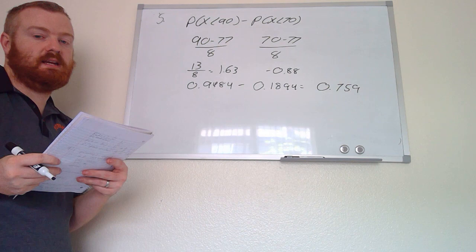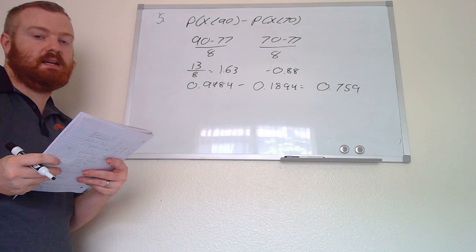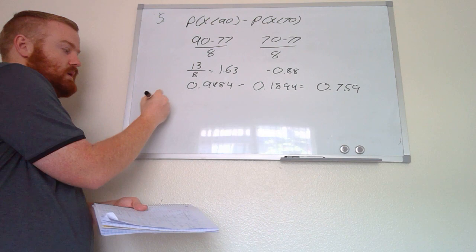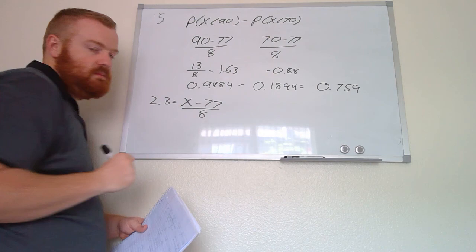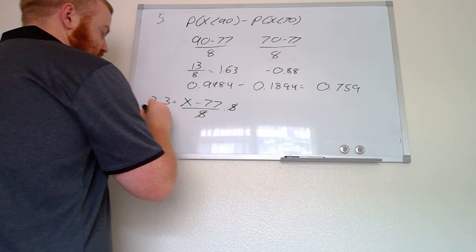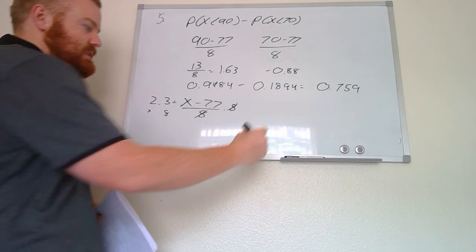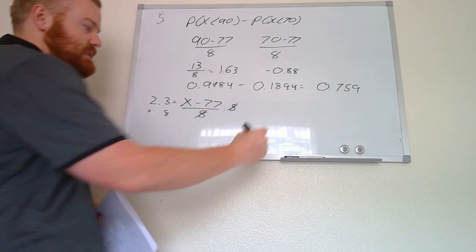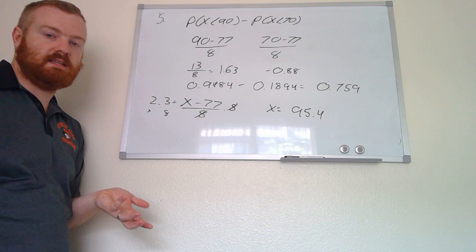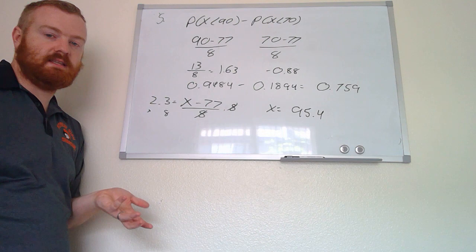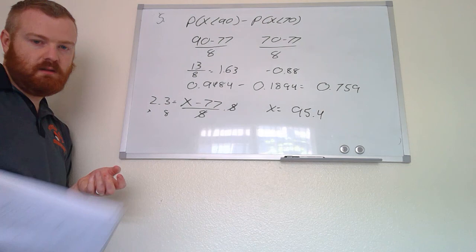For part D, what score would a student need if their Z-score is 2.3? We use the Z-score formula: 2.3 = (X − 77) / 8. Multiply both sides by 8: 2.3 × 8 = 18.4, then add 77. That gives us 95.4. So the student scored 95.4 to achieve a Z-score of 2.3, meaning their score was 2.3 standard deviations above the mean — we'd expect a pretty high score.